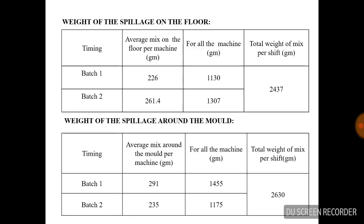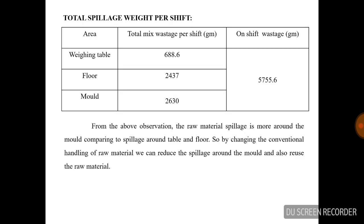The next tabular column represents the spillage on the floor and another table represents the spillage around the mold. This tabular column represents the total spillage weight per shift. Comparing the varying areas of weighing table, floor, and mold, around 5755.6 grams get wasted from the three areas. From the above observation, the raw material spillage is highest around the mold compared to spillage around the table and floor. By changing the conventional handling of raw material, we can reduce the spillage around the mold and also reuse the raw material.